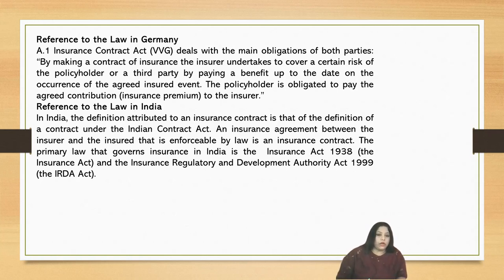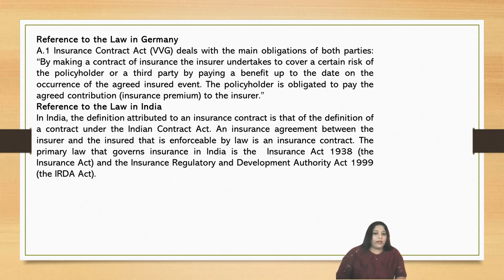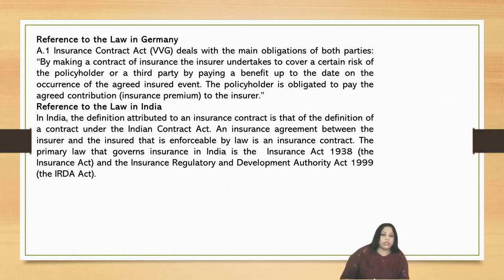Now the law in Germany. Article 1 of the Insurance Contract Act deals with the main obligations of both parties. By making a contract of insurance, the insurer undertakes to cover a certain risk of the policyholder or a third party by paying a benefit up to the date and occurrence of the agreed insured event. This is the definition given under Article 1 of the Insurance Contract Act in Germany.